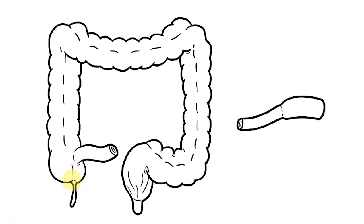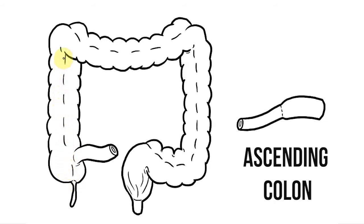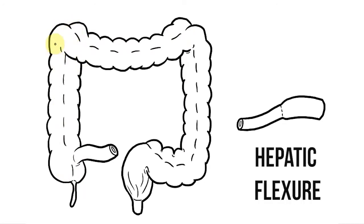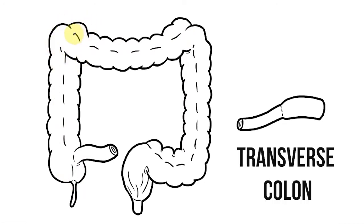The large intestine or colon then travels up the right hand side of the body as the ascending colon until it meets the liver. Here it bends and changes direction to travel across the abdomen. We call a bend in the colon a flexure, so this will be the hepatic flexure leading into our transverse colon.